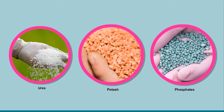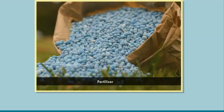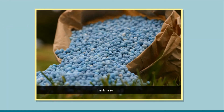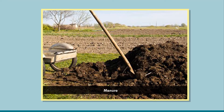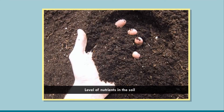Differences between fertilizer and manure. A fertilizer is a chemical compound prepared in factories. It does not provide any humus to the soil, but is very rich in plant nutrients. Manure is a natural substance prepared by the decomposition of animal and plant waste in the fields. It provides a lot of humus to the soil but is relatively less rich in plant nutrients. Excessive use of fertilizers makes the soil less fertile and is also a source of water pollution.